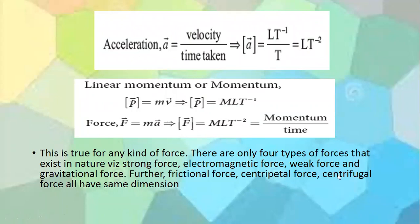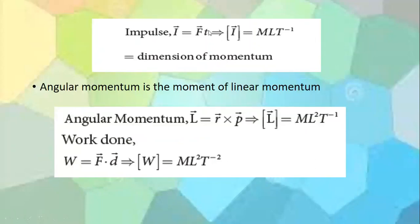There are four fundamental forces in nature — strong force, electromagnetic force, weak force, and gravitational force — as well as frictional, centrifugal, and magnetic forces. All forces have the same dimension, MLT⁻². Impulse is force multiplied by time, so its dimension is MLT⁻² × T = MLT⁻¹, which is the same dimension as momentum. Impulse and momentum have the same dimensions.